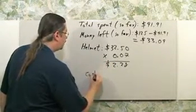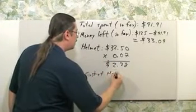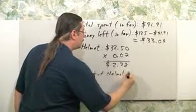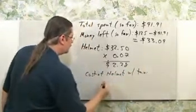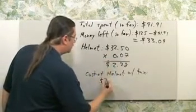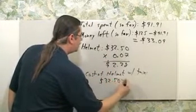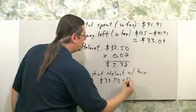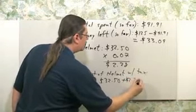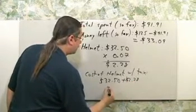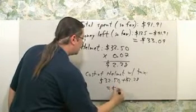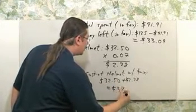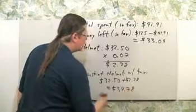Therefore, you can write down cost, helmet, with tax. So let's go ahead and add these numbers up. $32.50 plus $2.28. When you add those up, you're going to get $34.78.